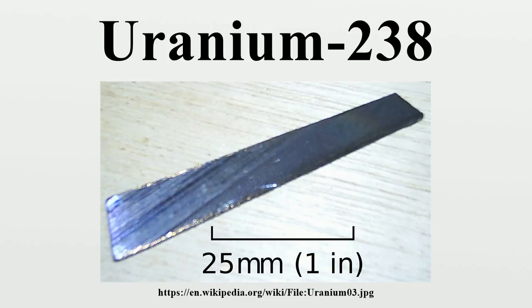Radiation shielding: U-238 is also used as a radiation shield. Its alpha radiation is easily stopped by the non-radioactive casing of the shielding, and uranium's high atomic weight and high number of electrons are highly effective in absorbing gamma rays and X-rays. It is not as effective as ordinary water for stopping fast neutrons. Both metallic depleted uranium and depleted uranium dioxide are used for radiation shielding. Uranium is about five times better as a gamma ray shield than lead, so a shield with the same effectiveness can be packed into a thinner layer.